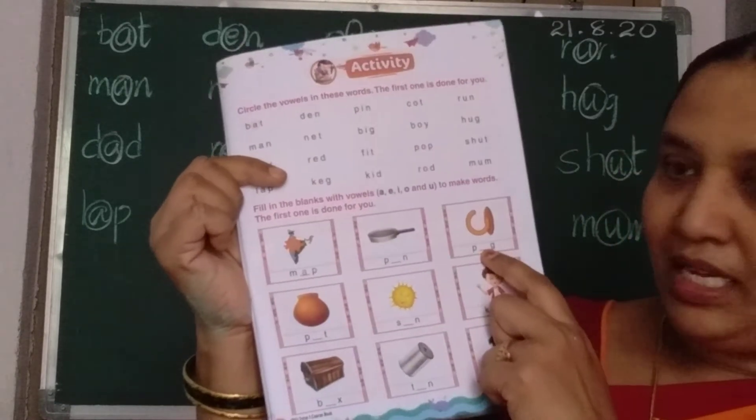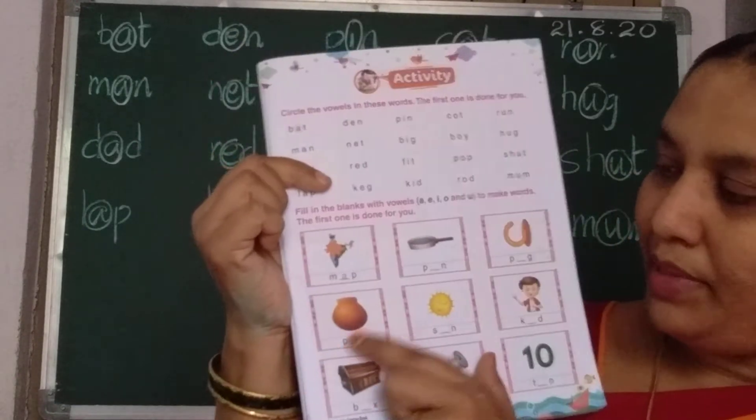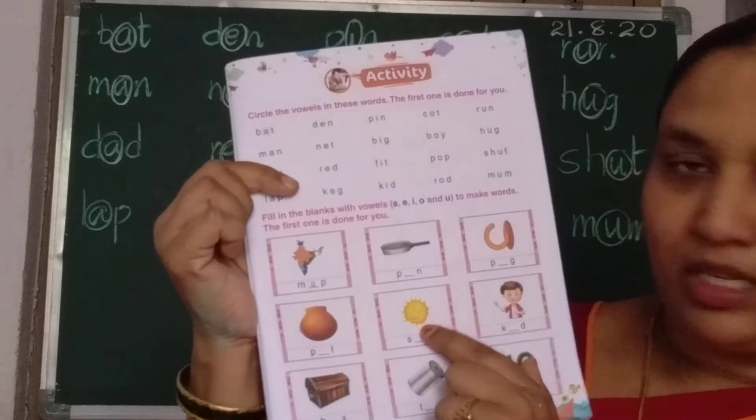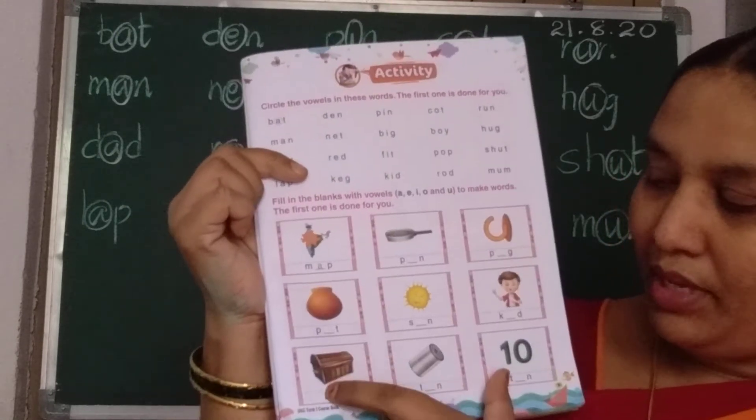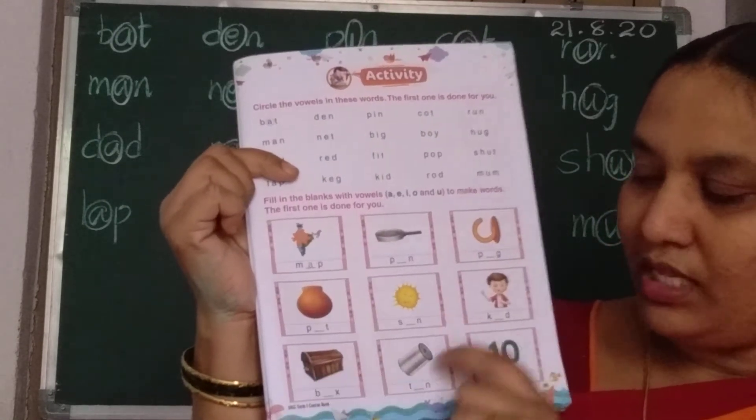Peg — P, E, G. Pot — P, O, T. Sun — S, U, N. Kid — K, I, D. Box — B, O, X.